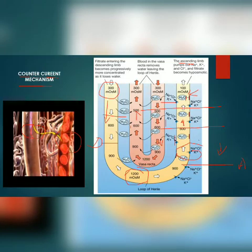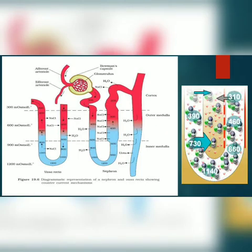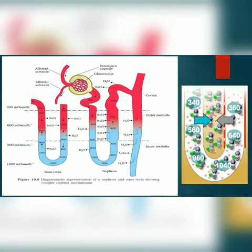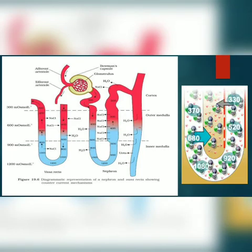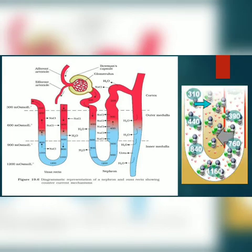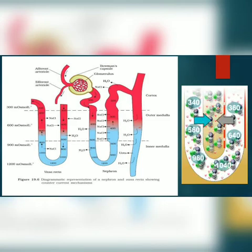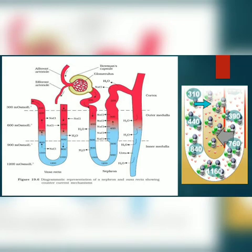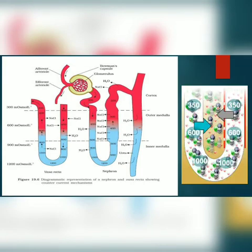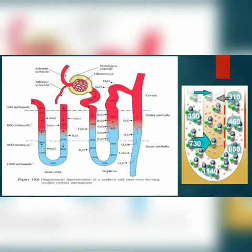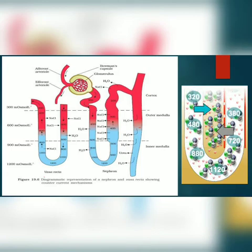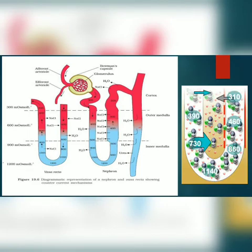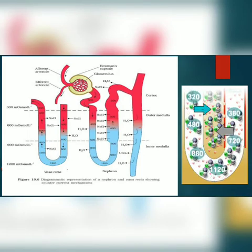The collecting duct transports urea into the medullary interstitium, and sodium chloride is also transported into the medullary interstitial fluid. This transport of substances is facilitated by the spatial arrangement of the loop of Henle and the Vasa recta, which is called the counter current mechanism. This mechanism helps to maintain the concentration gradient in the medullary region.